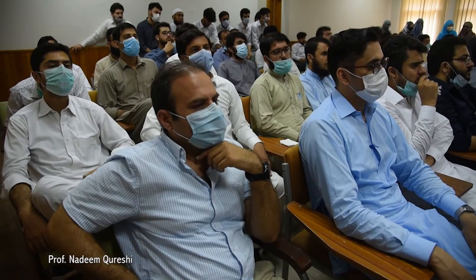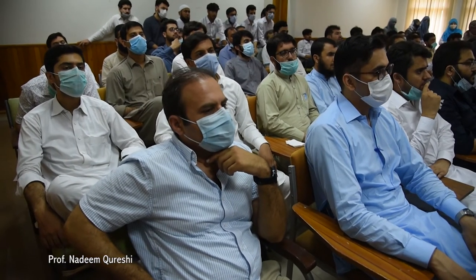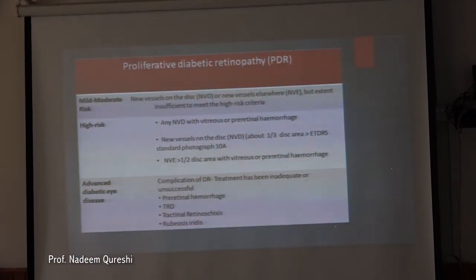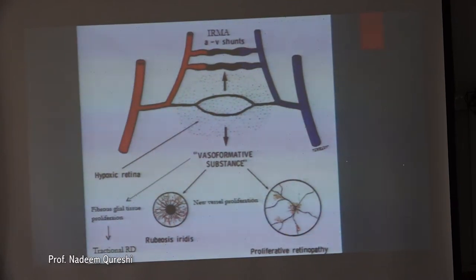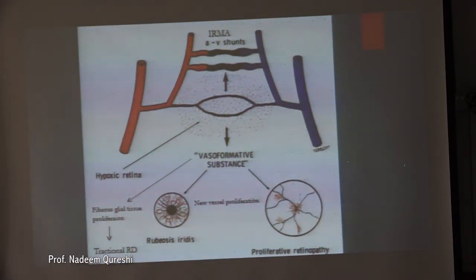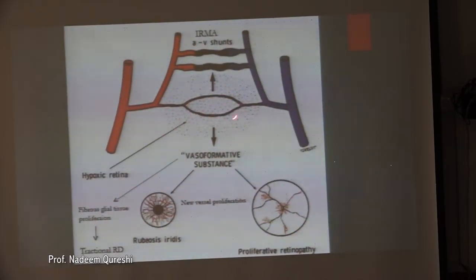This is a diagrammatic presentation showing the ischemic area. With microvascular occlusion, it leads to retinal ischemia, and this retinal ischemia then leads to the formation of IRMA. It can lead to neovascularization and ultimately to fibrovascular proliferation, which is a more severe form of the disease.